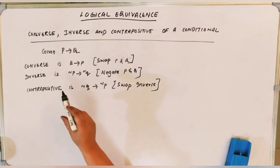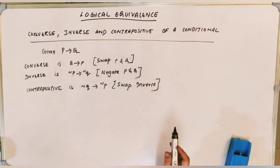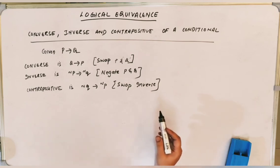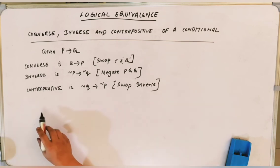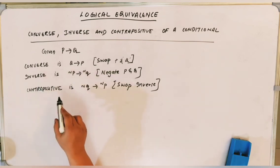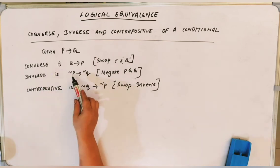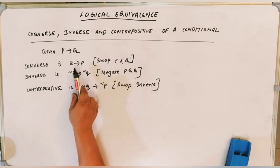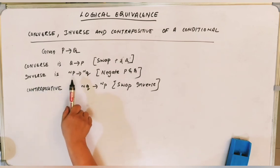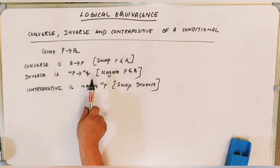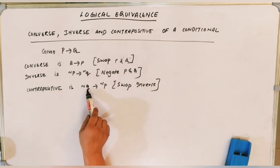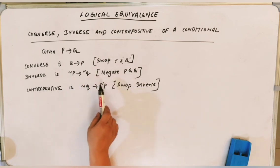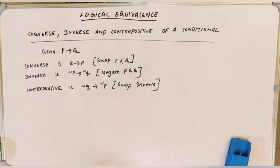Let's talk about converse, inverse, and contrapositive of a conditional statement. For P conditional Q: converse is Q conditional P (swap positions); inverse is NOT P conditional NOT Q (negate both); contrapositive is NOT Q conditional NOT P (swap the negated versions from inverse).